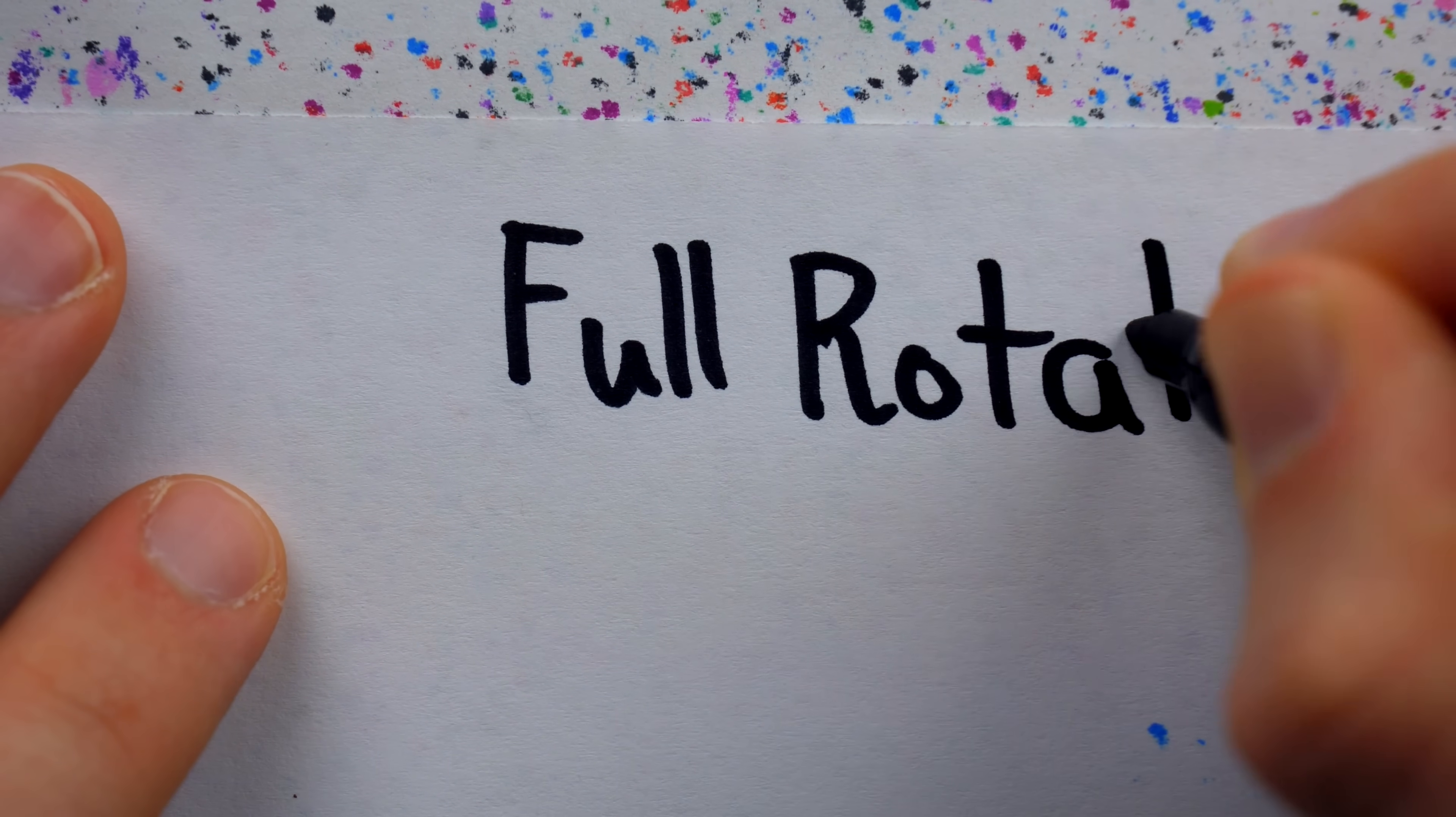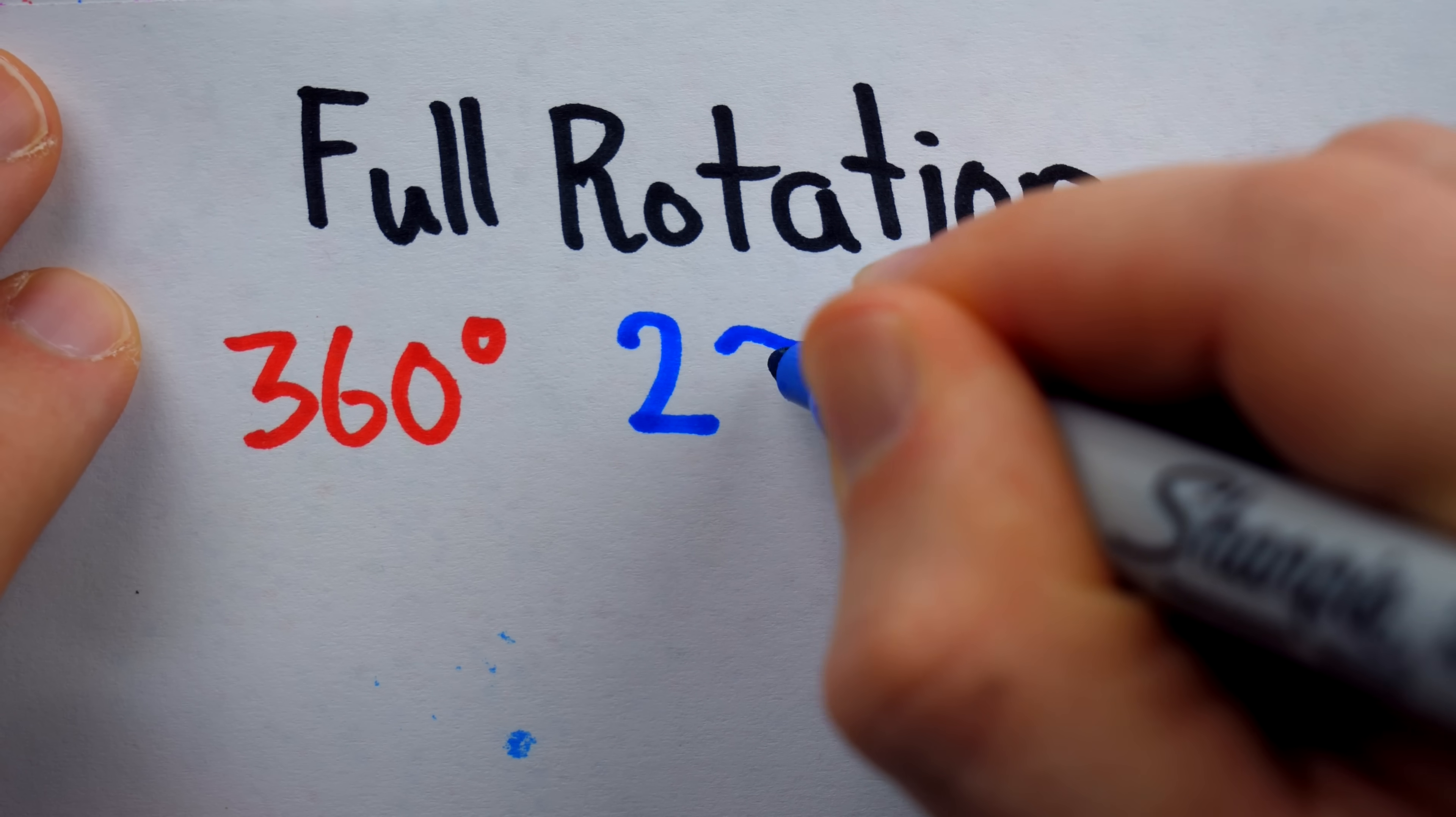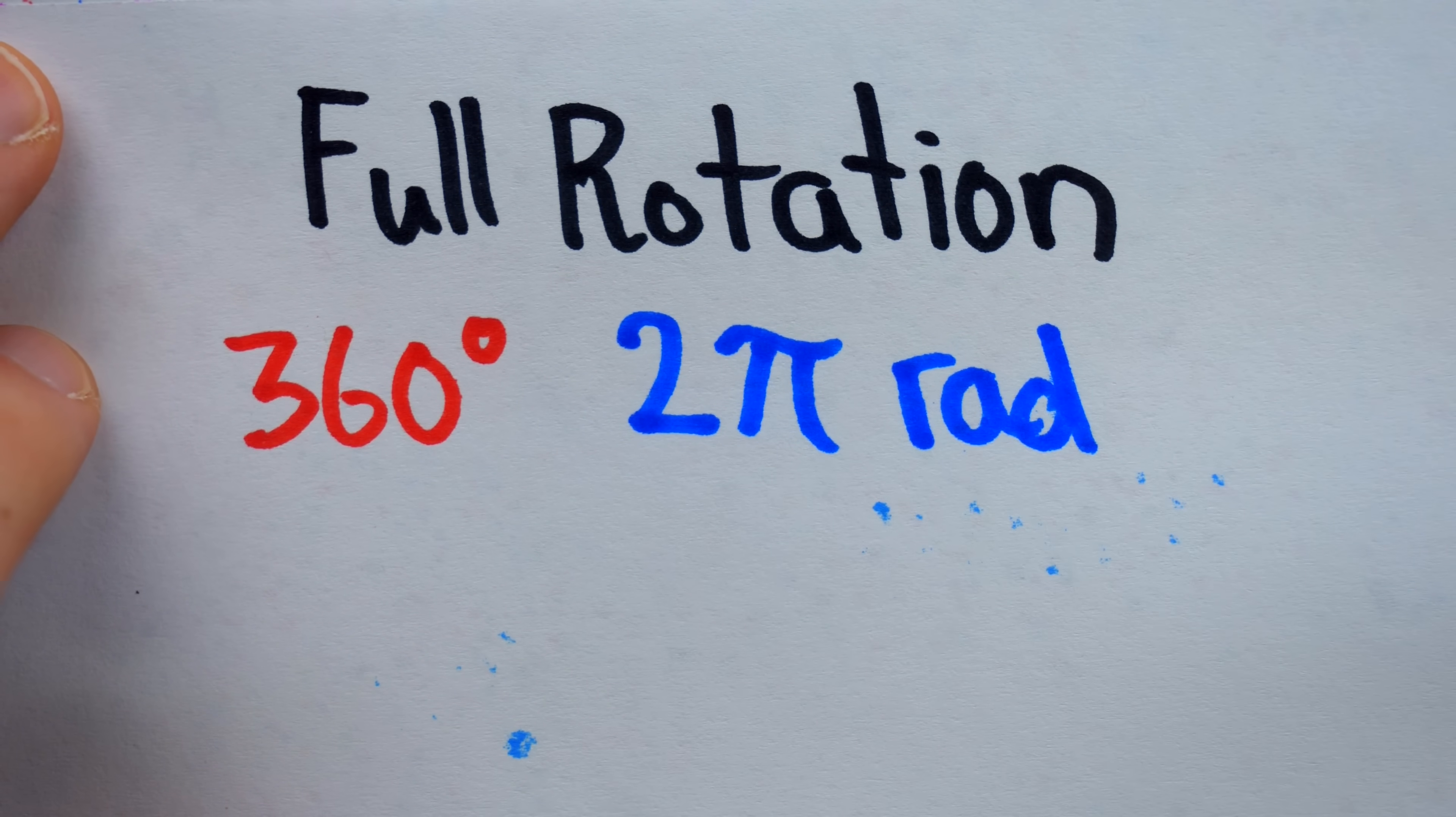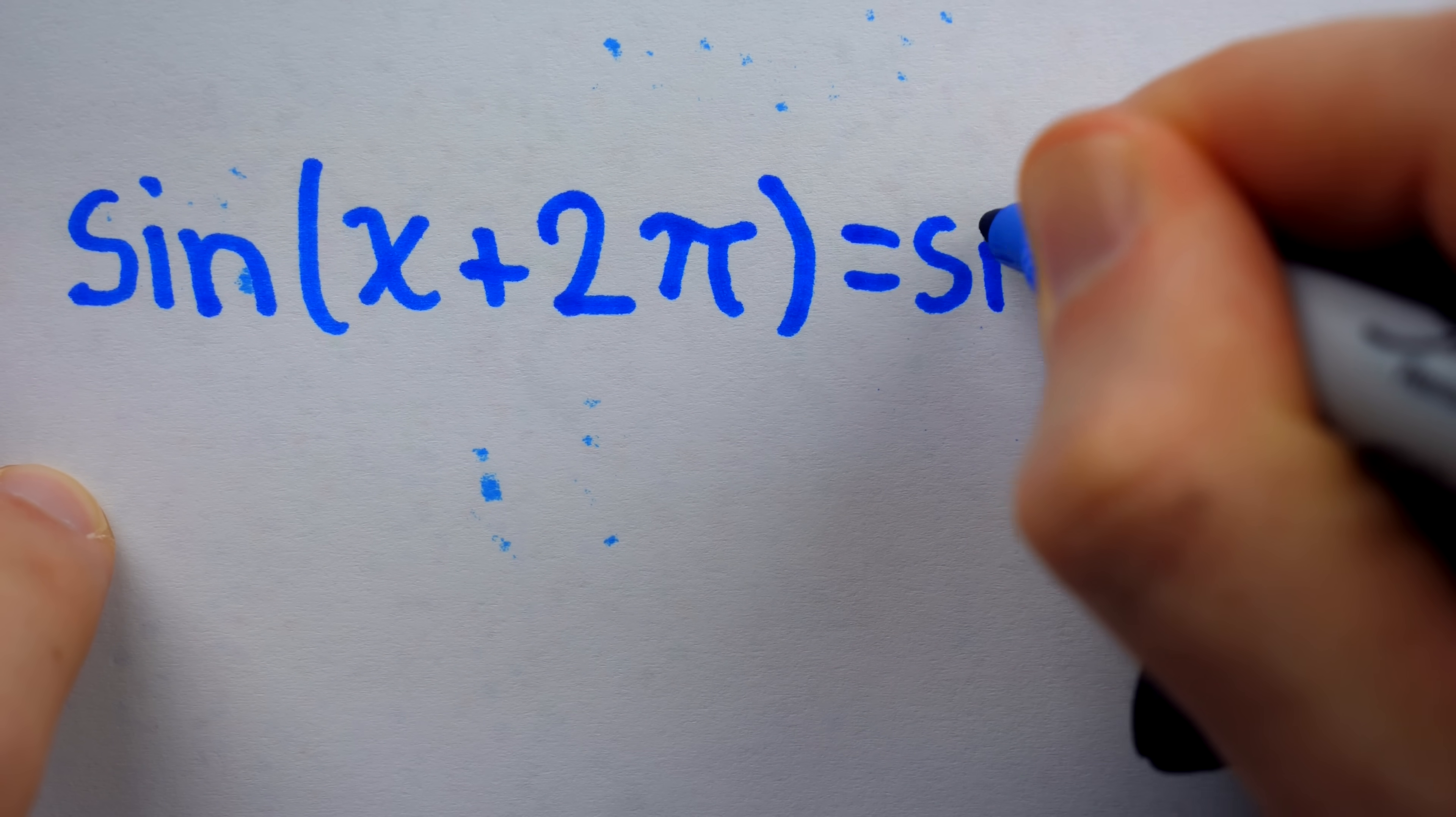And what's a full rotation? Well, 360 degrees. Or using radians, which is just a better way to measure angles, it's two pi radians.